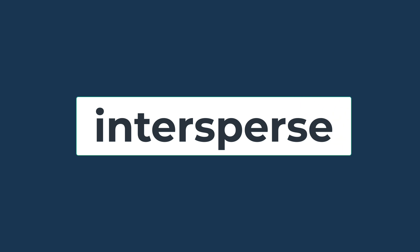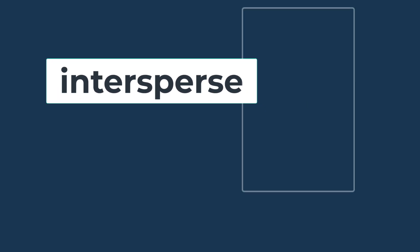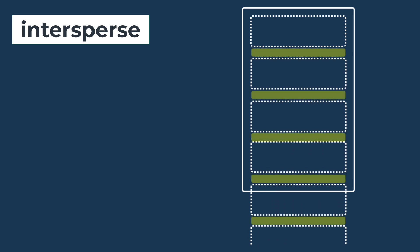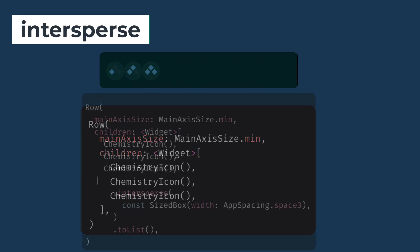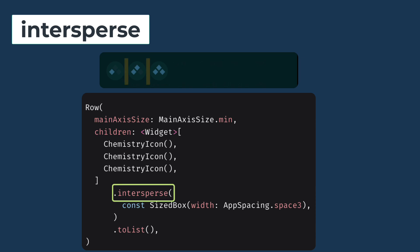First is the intersperse package. The intersperse package in Flutter is a useful tool for manipulating lists, particularly when you need to insert a specific widget or element between each item in a list. It allows you to easily insert a specific widget or element between each item, making it simple to add separators, dividers, or padding between list items. If you are displaying a list of items and want a consistent separator between them, for example a horizontal line or padding, intersperse simplifies this task without the need for complex loops or manual list manipulations.